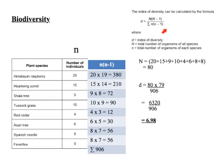So we need the top number — big N, the total number of all the organisms. So we add them all up: 20 plus 15, etc., plus 8 plus 8 gives 80 organisms in total. So big N is 80. Big N times (big N minus 1): 80 times 79 divided by 906. So 6,320 divided by 906 gives an answer of 6.98. So the index of diversity is 6.98.